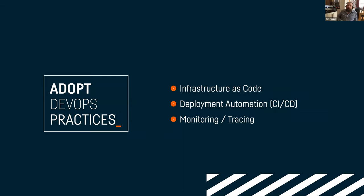Tool vendors who suggest you buy their tool to 'buy DevOps' are obviously missing the point. The practices that are useful for risk mitigation are: infrastructure as code — adopting tools like Terraform, Puppet, Pulumi, or CloudFormation to express your desired infrastructure states as software. Even now when we review infrastructures we see people not always adopting infrastructure as code, even though these tools have been available for a long time.